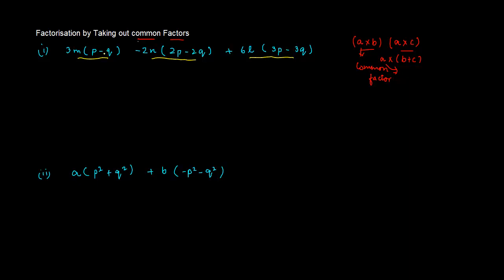But on a closer look, if you see, we have P minus Q over here. We have 2P minus 2Q over here. So, if we take a 2 common amongst these two, we can write this as 2 into P minus Q.